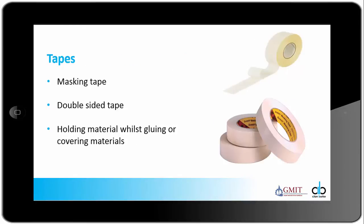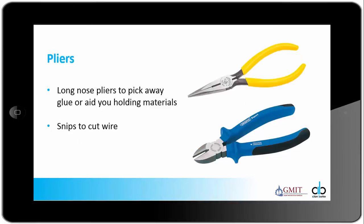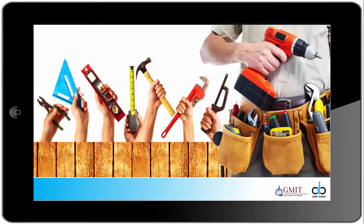Tapes — some very handy tapes to use in model making: masking tape and double sided tape, used for holding material whilst gluing or covering materials that you don't want to get paint or glue on. Pliers — two very handy pliers to have as well: a long nose pliers to pick away glue or to aid you holding or picking up very small materials or elements of your model, and a snips to cut wire often used in model making.